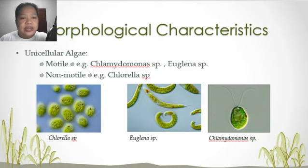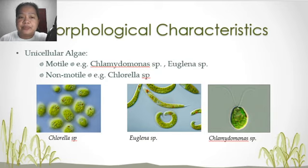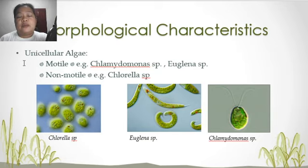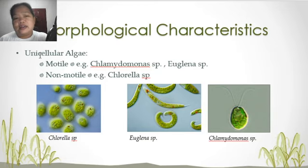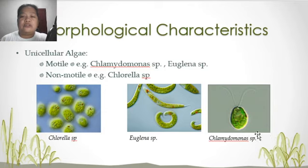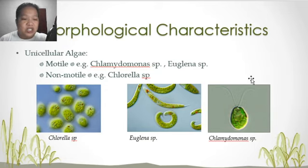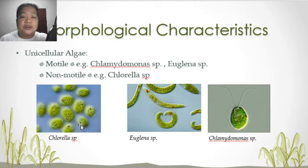Now let's look at the morphological characteristics of algae. There are algae that are unicellular — they can be motile or non-motile. Among the motile types, we have chlamydomonas and euglena, as seen in the pictures shown. In the non-motile type, we have the chlorella species.